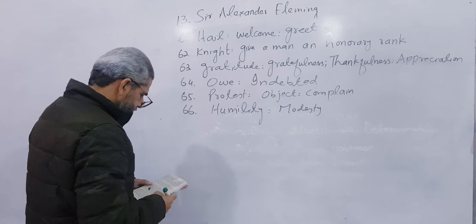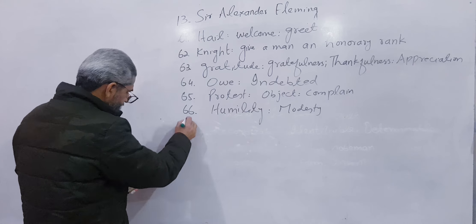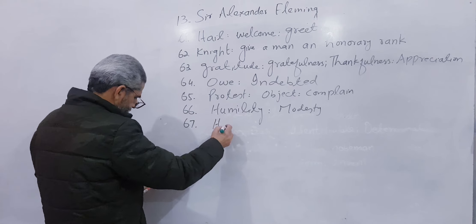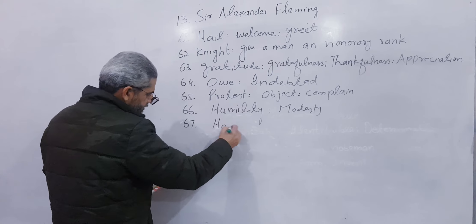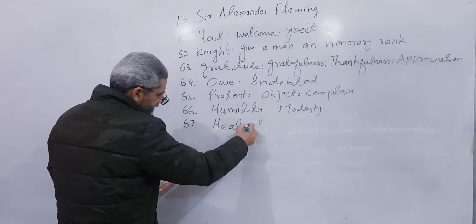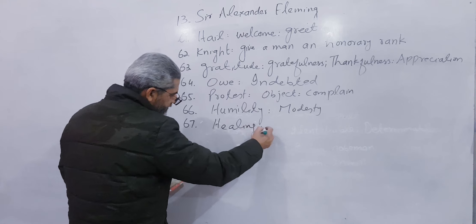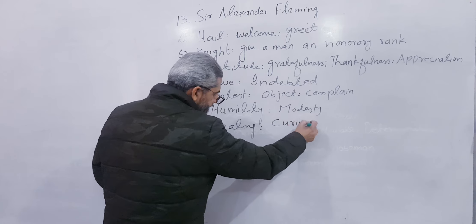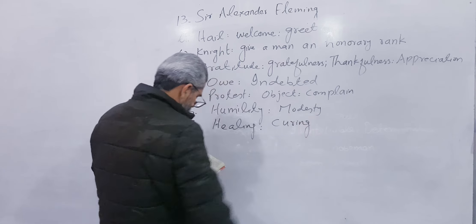Number 67: Healing — means to make healthy. Write curing, C-U-R-I-N-G.